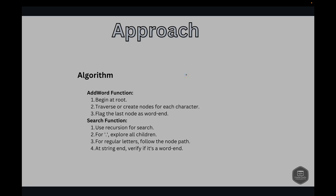For the addWord method, we initialize the current node to the root, then for each character in the word, if the character is not a child of the current node, we create a new TrieNode. We then move to the child node corresponding to each character. After processing all characters, we mark the current node as the end of the word to indicate that the word ends there.